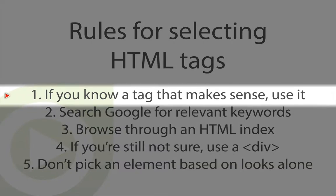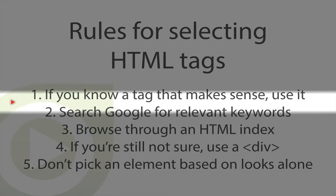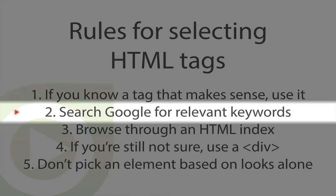First of all, if you know a tag that will work for what you're going for, use it. But if it feels like the meaning that you're trying to convey can't be captured in the tags that you know already, go ahead and hop on Google and search for relevant keywords. Google can be good at translating what you're thinking into the actual tag that you're looking for.